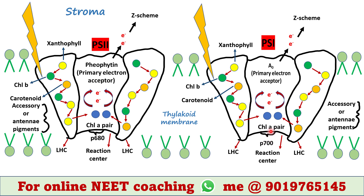Antenna pigments absorb sunlight of different wavelengths. We need to remember that plants absorb only 400 to 700 nanometer wavelength light to effectively perform photosynthesis. This region, that is 400 to 700 nanometer wavelength, is called photosynthetically active radiation, or PAR.